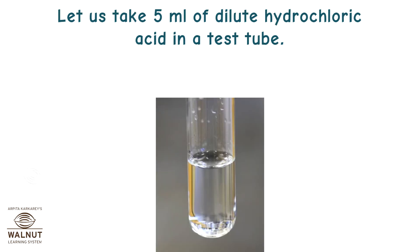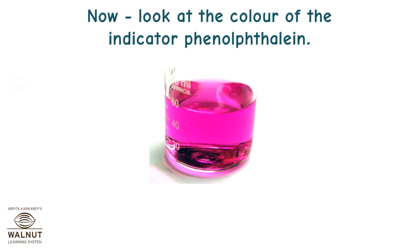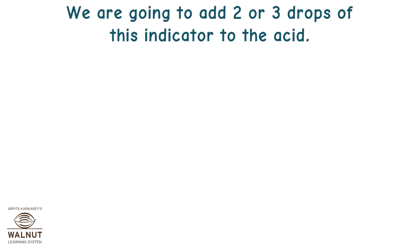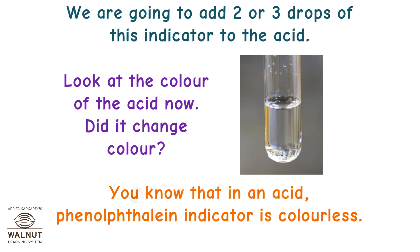Let us take 5 ml of dilute hydrochloric acid in a test tube. Look at the color of the solution. Now look at the color of the indicator phenolphthalein. We are going to add 2 or 3 drops of this indicator to the acid. Look at the color of the acid now. In an acid, phenolphthalein indicator is colorless.